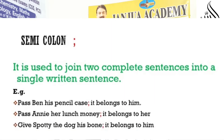The next one is the semicolon. It is used to join two complete sentences into a single written sentence. For example: 'Pass Ben his pencil case; it belongs to him.' 'Pass Annie her lunch money; it belongs to her.' 'Give the dog his bone; it belongs to him.'